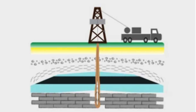There are many different types of geophysical logs that can be used to measure various physical properties. Some of the most common types include electrical resistivity logs, which measure the electrical resistance of subsurface materials. This can provide information about the porosity, permeability, and water content of rocks and soils.